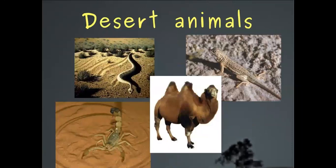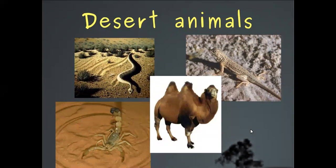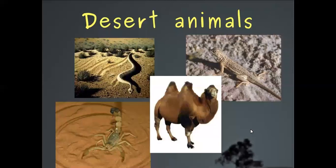Desert animals include snakes, camel, scorpion, and lizard. We also have meerkats — they're not cats, but more like a cousin of monkeys. They can stand up on the sand and look around to see if any snakes are approaching. You could call them the Saharan or desert cousin of the Jamaican mongoose.